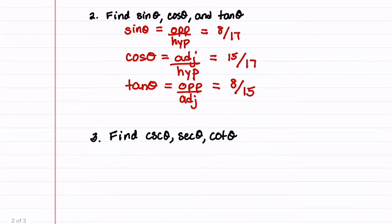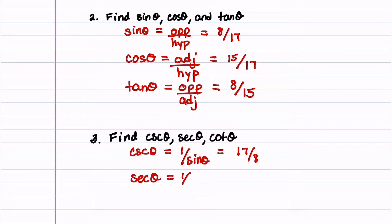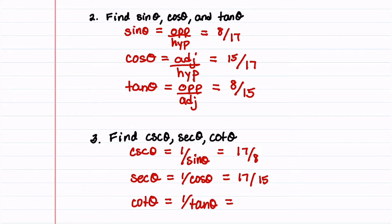Our last step is to find the three remaining trigonometric functions using reciprocal relationships. Cosecant theta is 1 over sine theta, so we invert sine theta and get 17 over 8. Secant theta is 1 over cosine theta, so we invert cosine theta and get 17 over 15. And then lastly, cotangent theta is 1 over tangent theta, so we invert tangent theta and arrive at 15 divided by 8.